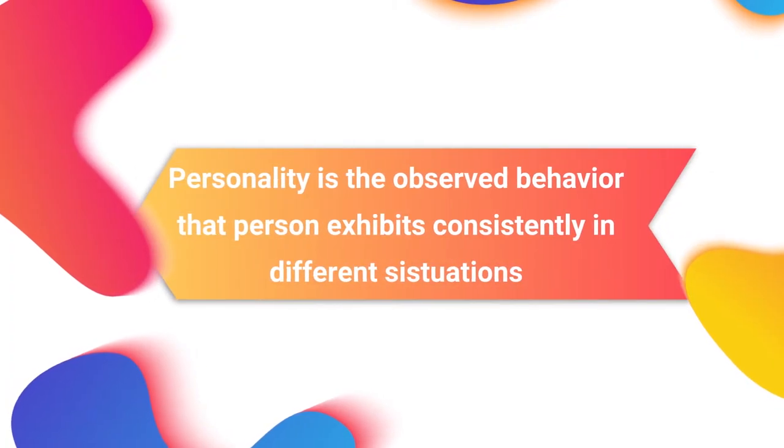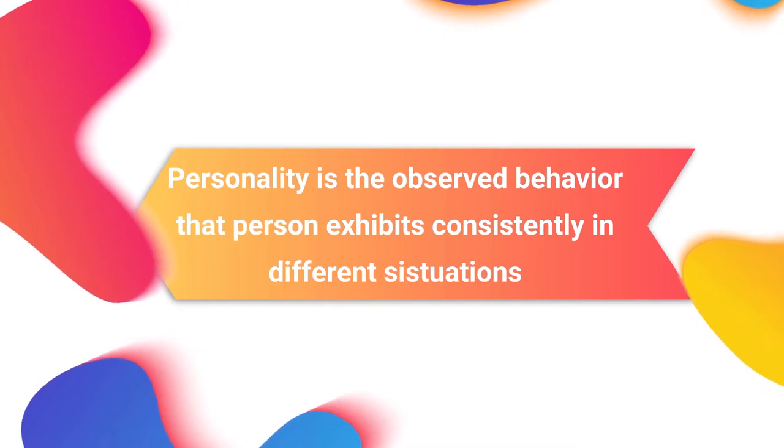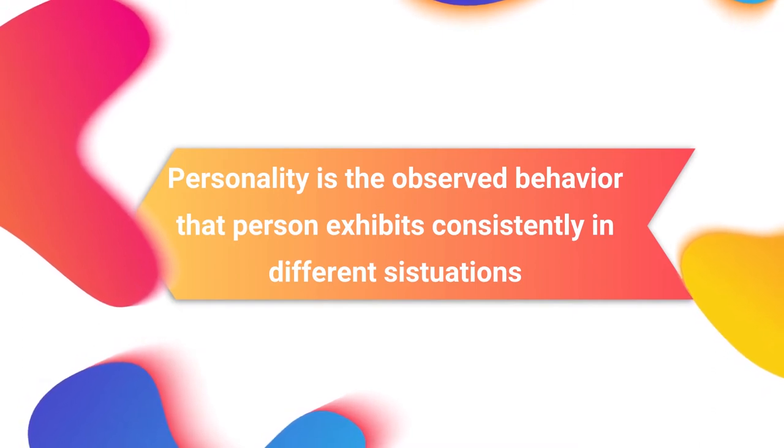In addition to looks, social attractiveness is also seen as a symbol of good personality. But from a scientific perspective, being attractive to others is a false conception of personality. Many psychologists have tried to explain the concept of personality from the perspective of individuality and consistency. Individual differences exist among people — they think, act, and respond differently to the same situations, and this individualized pattern of behavior determines a person's uniqueness or identity. From the perspective of consistency, personality is the observed behavior that a person exhibits consistently in different situations, and personality traits determine the way a person responds in a particular situation.